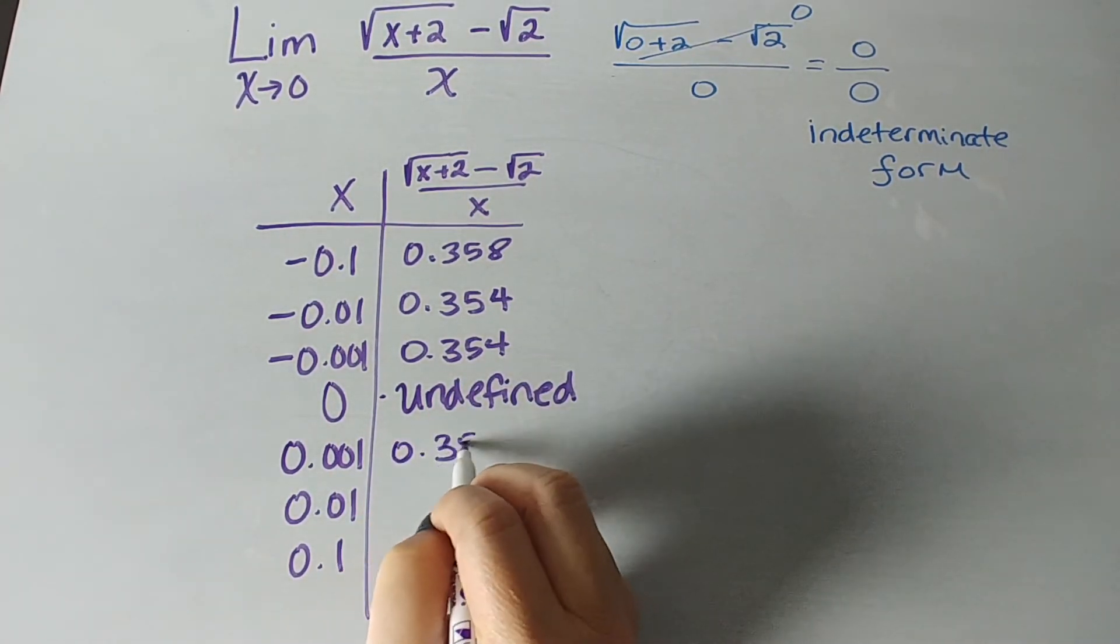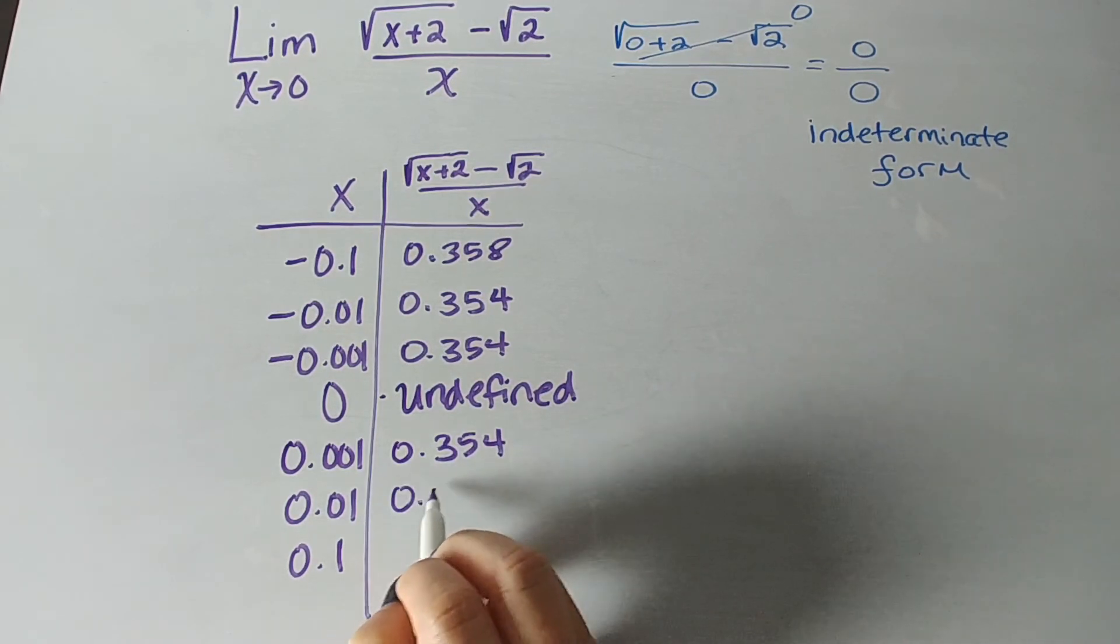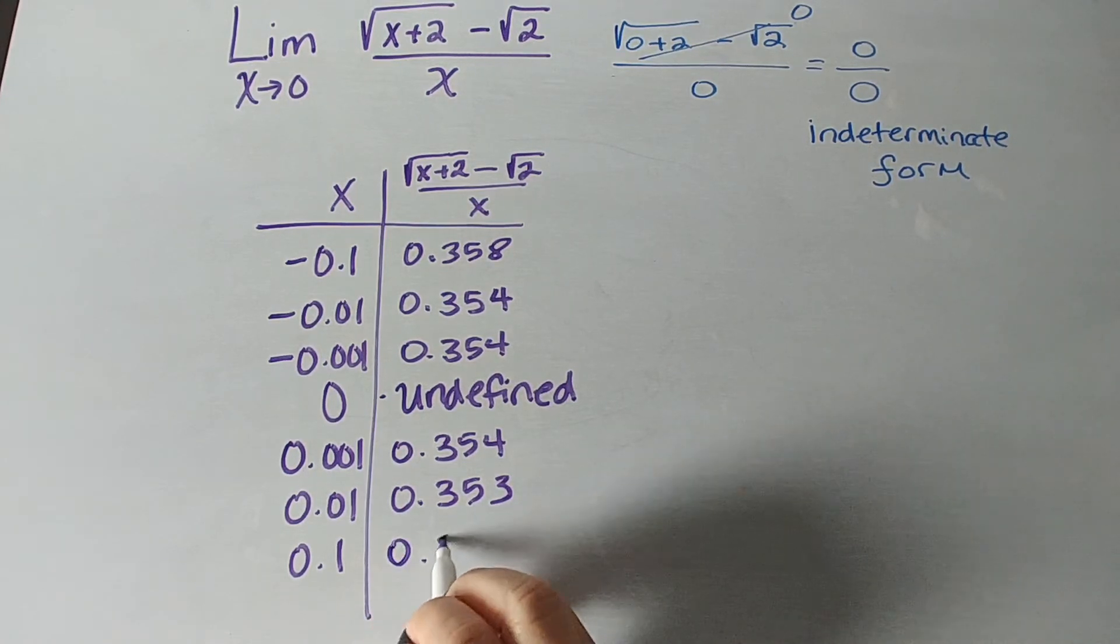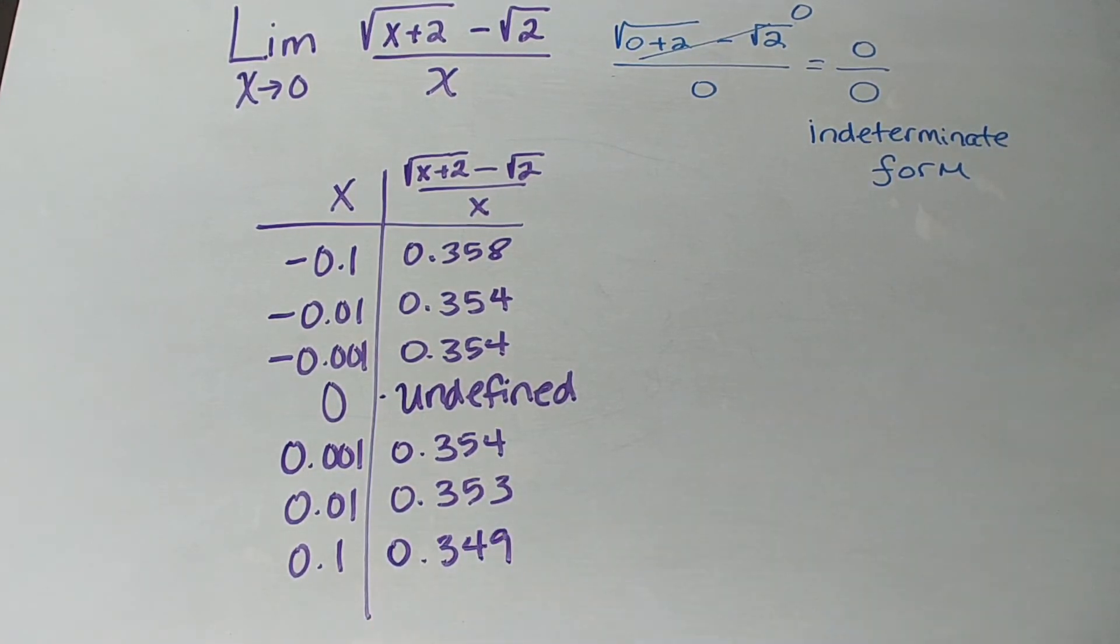And 0.354 here, 0.35 rounds to 3, and 0.349. Okay, so, we can say that as this function gets closer and closer to 0 from both the right side,